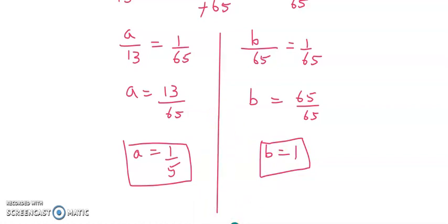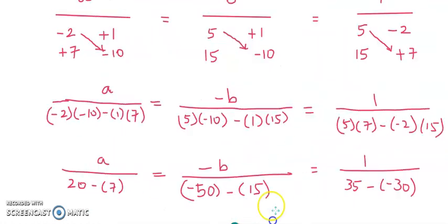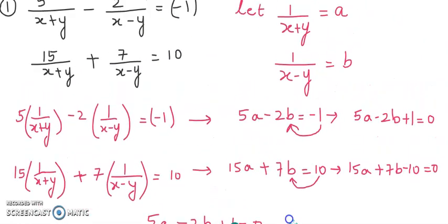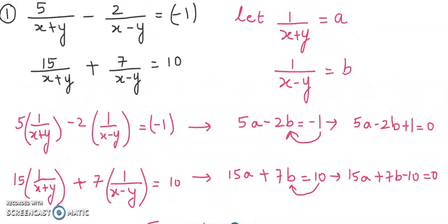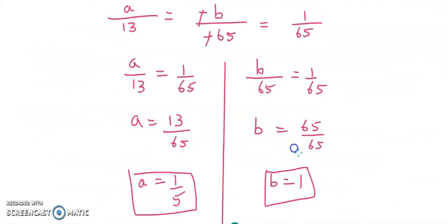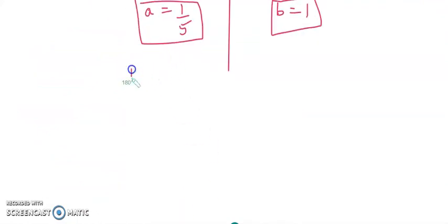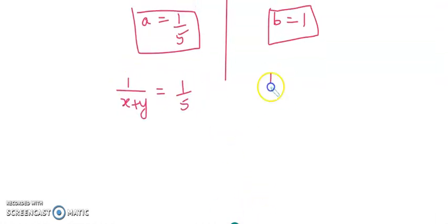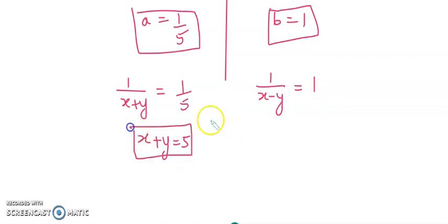Now, what is our a? We had supposed a equals to 1 upon x plus y, and b equals to 1 upon x minus y. So in place of a we put 1 upon x plus y equals to 1 upon 5, and in place of b we put 1 upon x minus y equals to 1. If you do cross multiplication, you get x plus y equals to 5 and x minus y equals to 1.